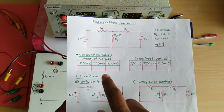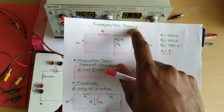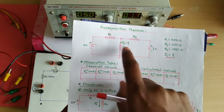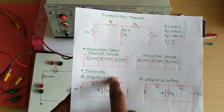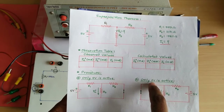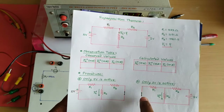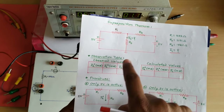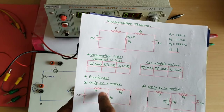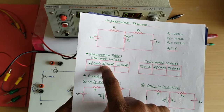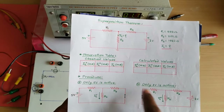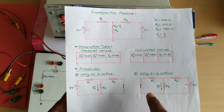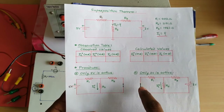As per the procedure, while applying the superposition theorem, you activate one source at a time. First, we activate 5V and disable 1V, measuring the resulting current. Then we enable only 1V and disable 5V. The observation table is divided into two parts: IL' is the current when only 5V is active, and IL'' is the current when only 1V is active. Finally, IL = IL' + IL''. We record observed values and then compare with calculated values.